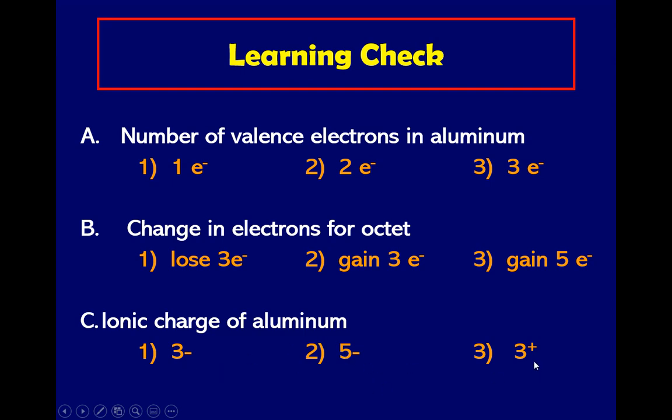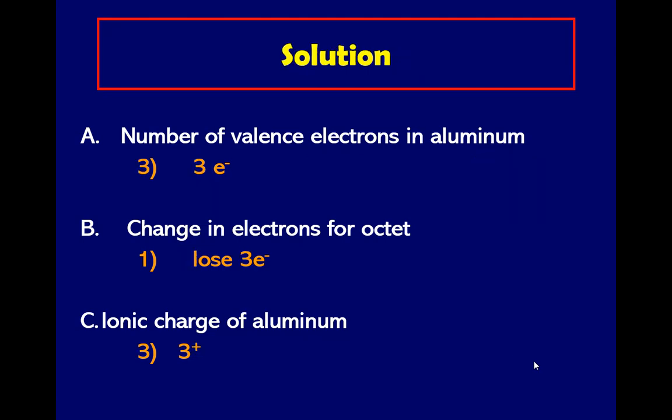So the answers are: the number of valence electrons in aluminum is three. The change in electrons for octet, to become stable, it needs to lose three electrons. And what is the charge of aluminum now? Positive three.